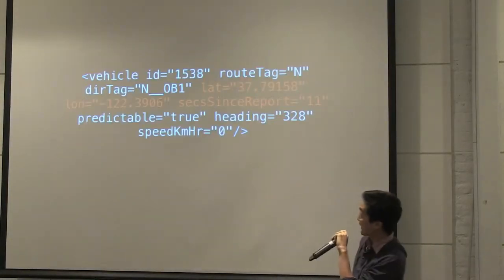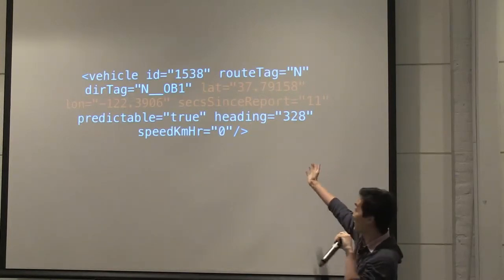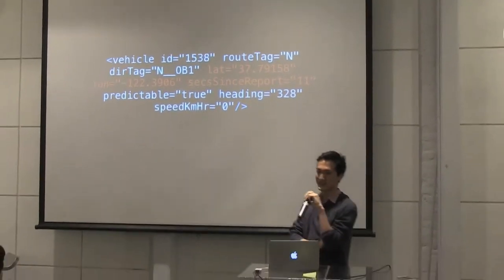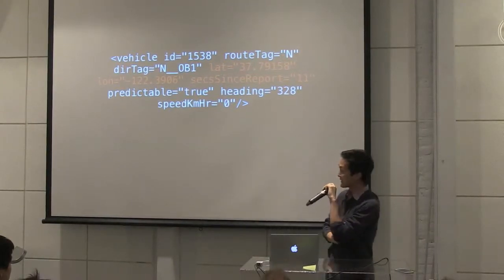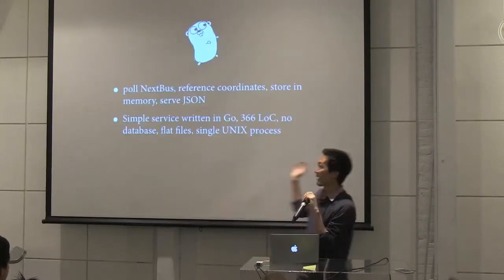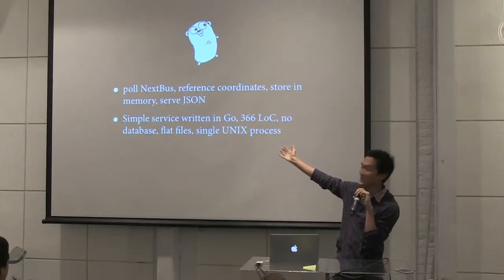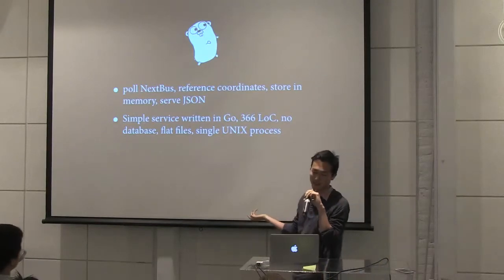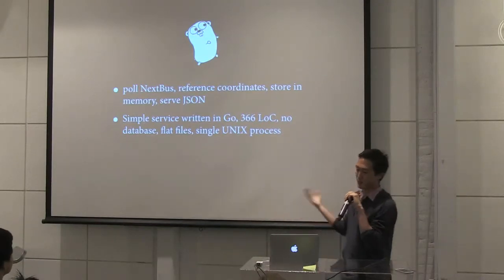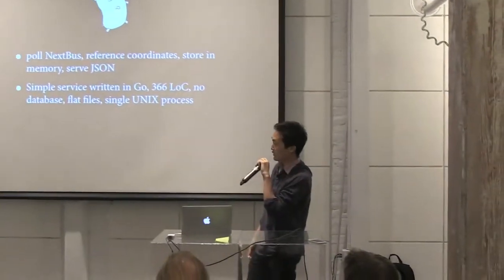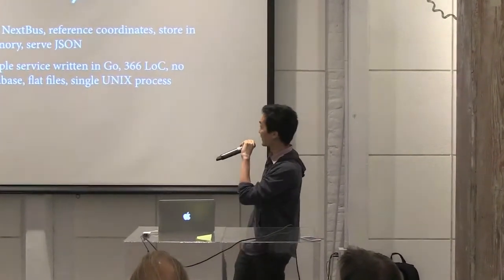Nextbus has an XML API. The things we care about are the latitude, the longitude, and the time of the report. One issue with Nextbus is it does not have any historical data — the only data available is at that instant in time. So I wrote a little web service in Go, which is a new fashionable programming language. If you're doing real-time stuff I really recommend it because it's really good at concurrency and dealing with serialization formats. The idea was to pull Nextbus data, do the linear referencing, and serve it out to the browser. I tried to keep it as simple as possible — about 350 lines of code, single process, no database.